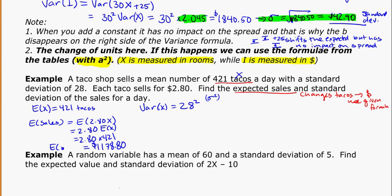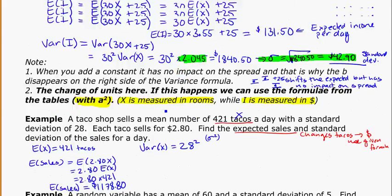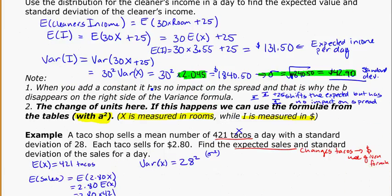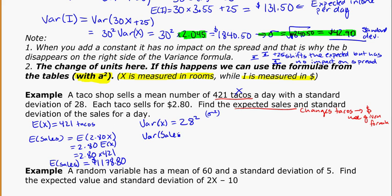And this is now dollars. So the expected sales is $1,178.80. Now my variance, again, here you've got the interesting situation where you've got to remember to square it. So for the expected value you just times it, but for the variance you have to square it.